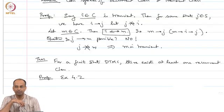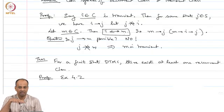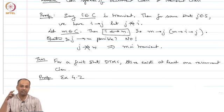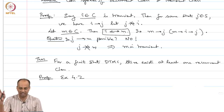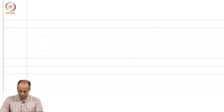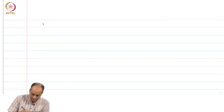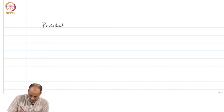So far we have described the classification of states into recurrent and transient states. We have said that when states belong to these classes, the classes can also be classified as entirely recurrent or entirely transient. That is the summary of what we have said so far. Next we will proceed to discuss periodicity of states, which is another classification.